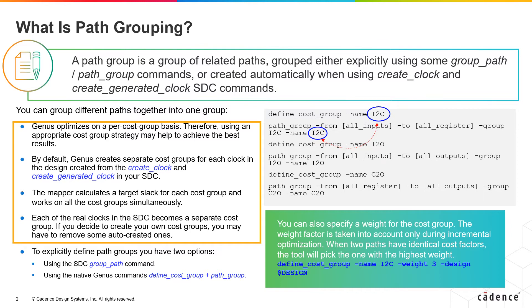And hence, using an appropriate cost group strategy is an important step to achieve the best timing results in the design. While running, mapper calculates the target slack for each of the cost groups and works on all cost groups.